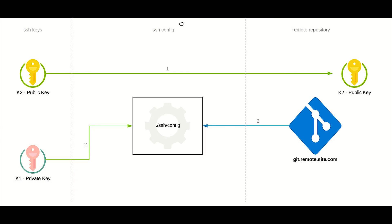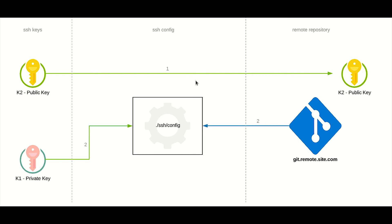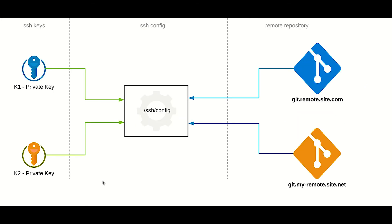Let's see how the configuration happens at a high level. The SSH keys are generated on your local PC using a key generator tool, which produces a public and private key pair. You need to share the public key with the remote repository, and the mapping of the private key to the remote repository is configured in the SSH config on your local PC. When setting up multiple accounts, there will be multiple key pairs generated and each mapping must be updated in the SSH config.